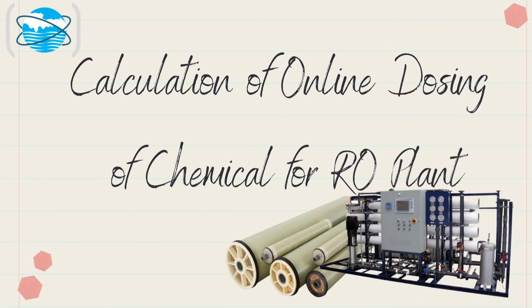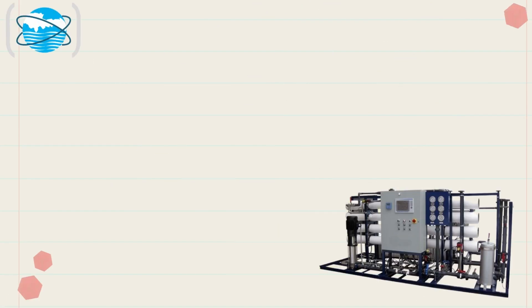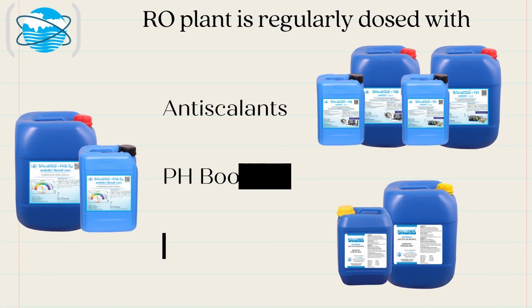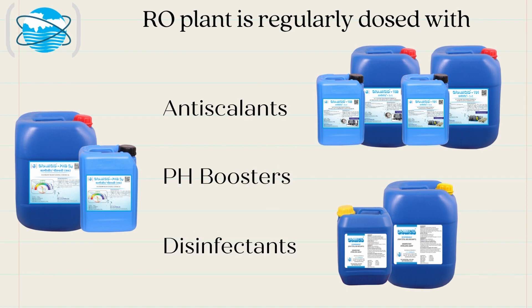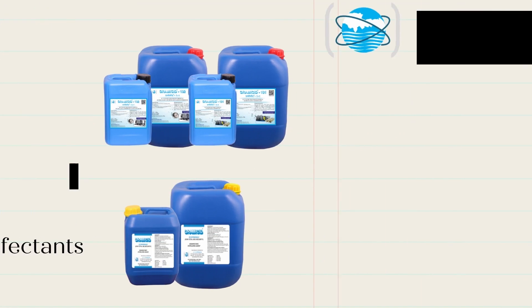Calculation of online dosing of chemical for RO plant. RO plant is regularly dosed with antiscalants, pH boosters and disinfectants.